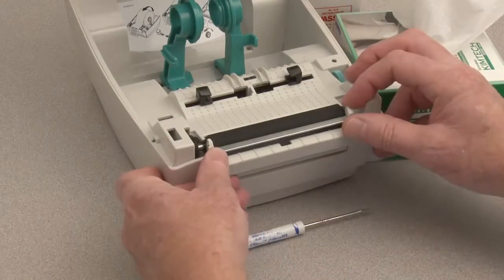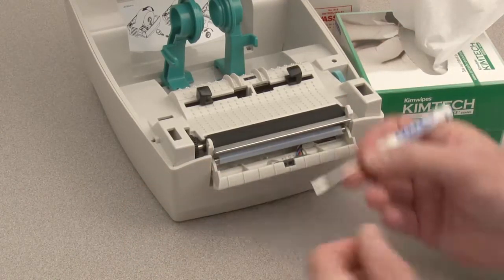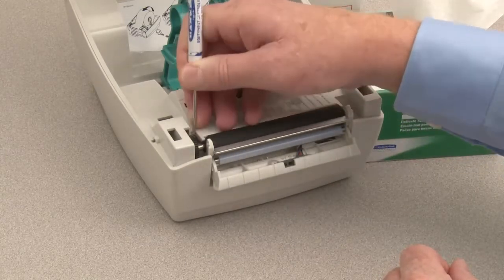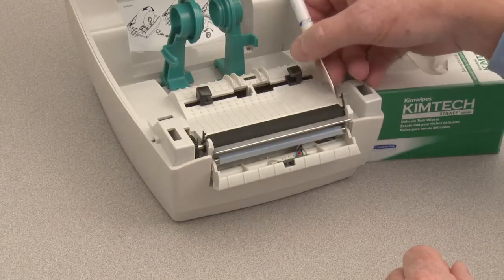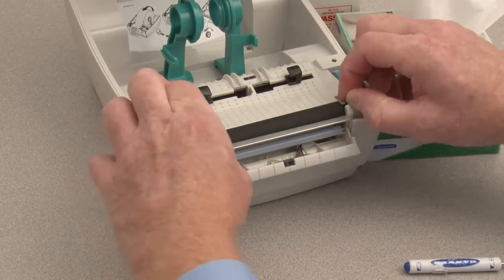If your printer has the dispenser option, open the door to remove the platen. Release the two bearing retainers and rotate up. Use the bearing retainers to lift the platen.